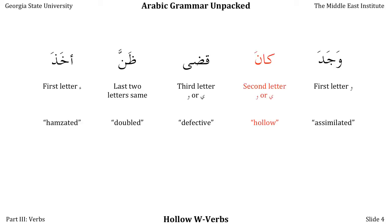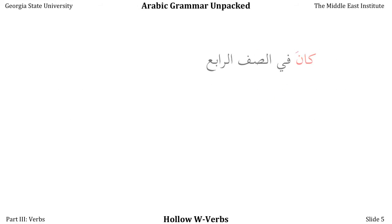Today we will be dealing with hollow verbs, specifically those whose middle letter is the letter WAU. If you've gone through any part of Al-Kitab, you've already discovered the most important verb in this group, which is the verb KANA, meaning 'to be.' Maha says of her cousin Khalid: KANA FISSOFF ARRABIH — he was in the fourth grade. WAKUNTU FISSOFF ARRABIH — and I was in the first grade.